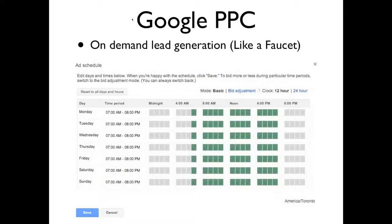Once you have your campaign up and running, we have found that most real estate partners cannot handle the volume of leads this system can generate when it's turned on 24 hours a day, seven days a week. So it's very important to use the ad scheduling feature to turn it up and down, just like a faucet — when you want leads, turn it up; when you're too busy and have too many leads, turn it back down. That's a great way to make sure you're not overwhelming your real estate partner and yourself with new leads.